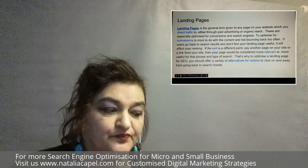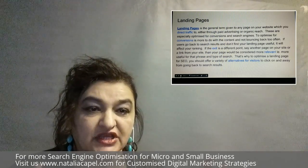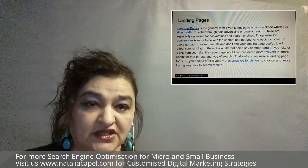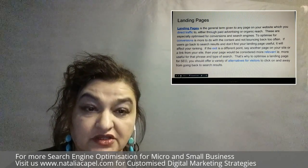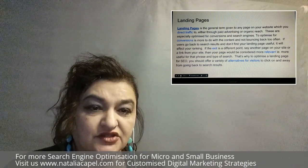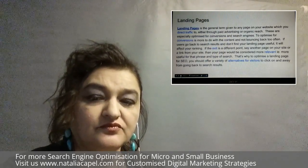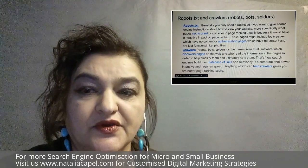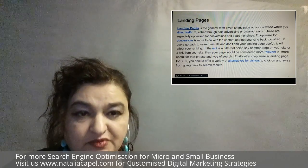The search engine classifies it as more relevant, it's faster to serve up your content, and it means less processing. There are a lot of factors that search engines take into account to do with actual computational efficiency. If you can help the search engine do that, it will give you a better ranking score, and landing pages are one of the ways you can do that. Obviously search engines don't give you the algorithms — there are only certain ways you can optimize for search engines.